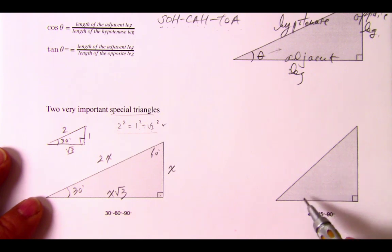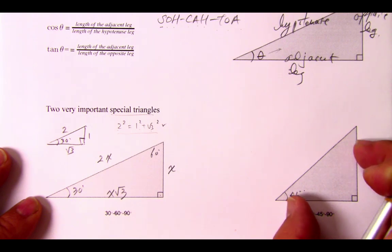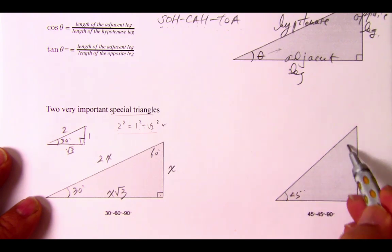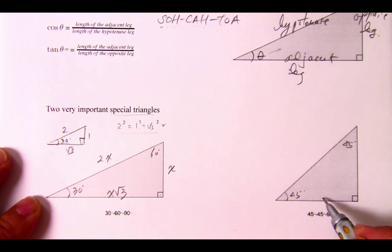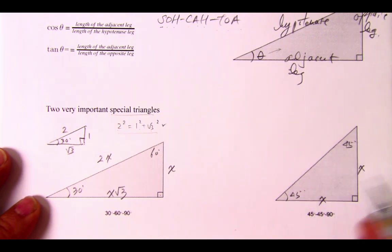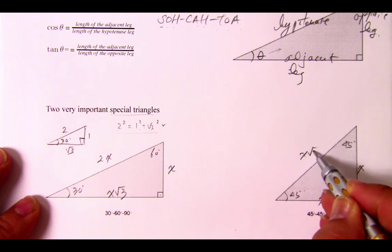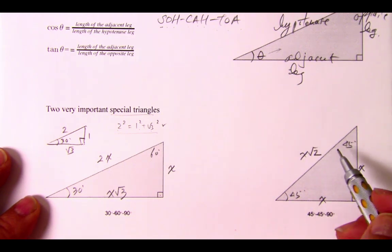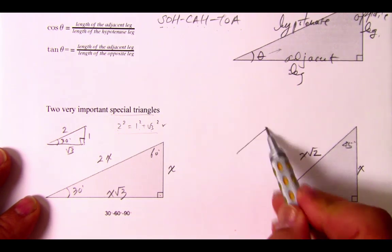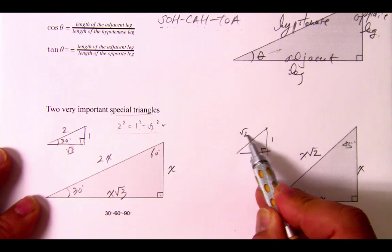Looking at 45-45-90, these two have to become complements, so we know this one has to be 45. If these two are length x, they're the same length because the opposite angles are the same. This has to be x times root 2. Sometimes what people do is just draw, without referring to x, call it 1, 1, root 2.